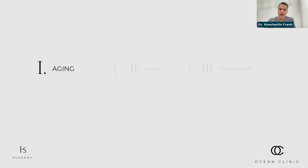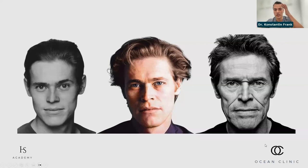Before we dive into the anatomy of the upper face, we need to focus on the aging process. If we look at other fields of medicine, they always treat the pathophysiology. Most of our patients who want to look younger don't actually have a disease, but they are aging, and we need to understand what happens to specific facial parts as we get older in order to ameliorate and rejuvenate them. Looking at celebrities and actors, you can see a common theme: forehead lines have formed, vertical glabella lines have formed, and skeletonization of the upper face has occurred.